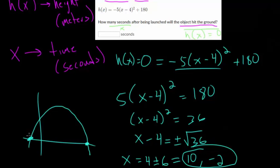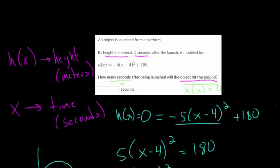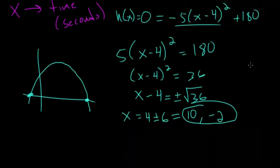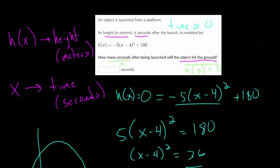Because we don't have negative time. In fact, any time less than zero, that's just time before the object was launched. So these problems kind of assume that time is greater than or equal to zero, we're not going to have negative time in these problems. So we can eliminate this negative 2 as one of the options. So that means when x equals 10, the object will hit the ground.